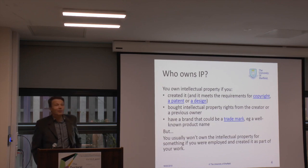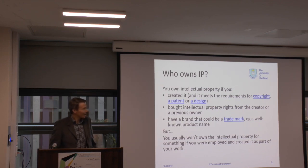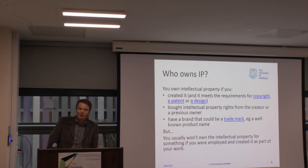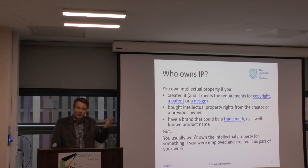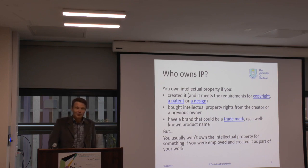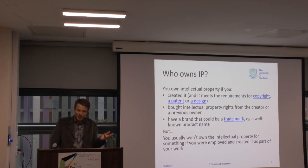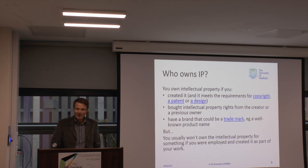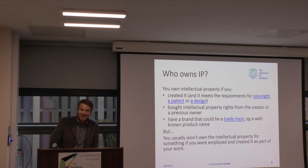Another key point about ownership of intellectual property: IP implies ownership, and who actually owns it. In legal terms, you as the creator of any intellectual property are the owner of it — or if you bought that intellectual property or the rights from someone else, you are the owner. But this applies to registered research students as well as employees: if you're employed by a company or by the university, the university or your company employer will own the intellectual property that you create. As a registered PhD student, the university asserts rights and actually owns the IP coming out of your research programme.